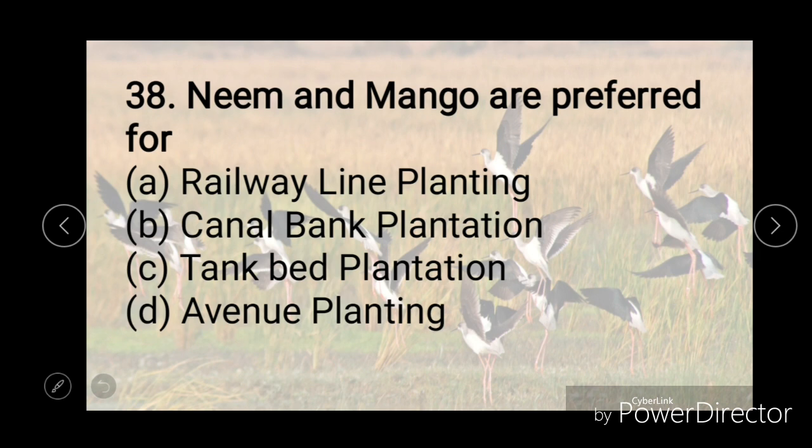Neem and mango are preferred for — railway line planting, canal bank plantation, tank bed plantation, or avenue plantation. And the right answer is D, that is avenue planting.